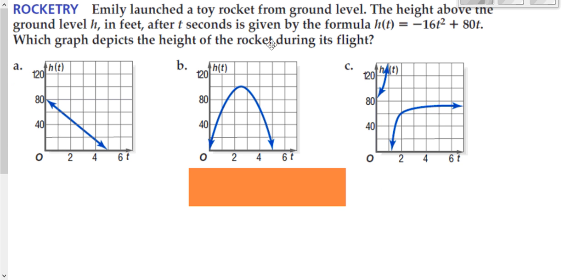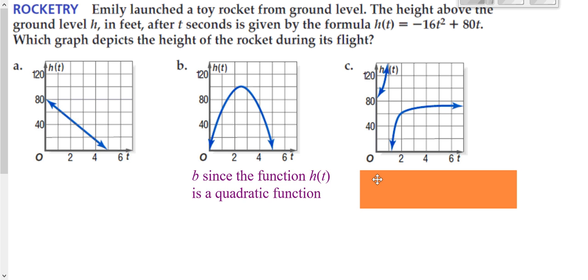So here we have a toy rocket that's being launched. We're told that the height above the ground is given to us by -16t² + 80t. Which graph depicts the height of our rocket given a certain amount of time? We would know it would have to be the center one because it's quadratic. The center one's the shape of a parabola, which is a quadratic, and you were given a quadratic right up here.